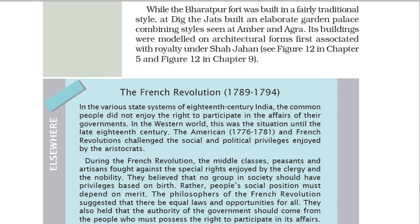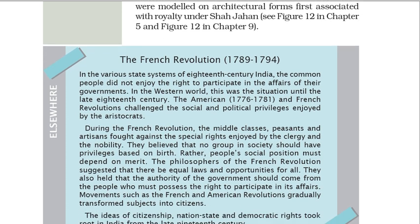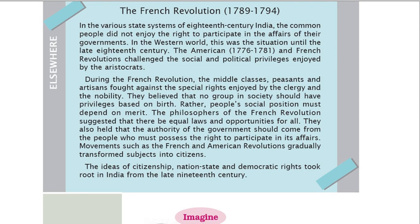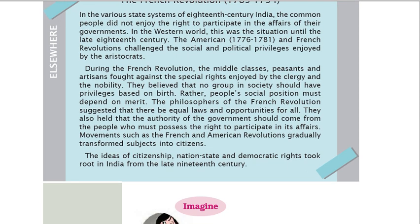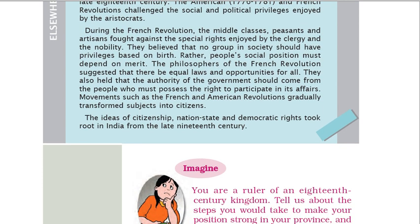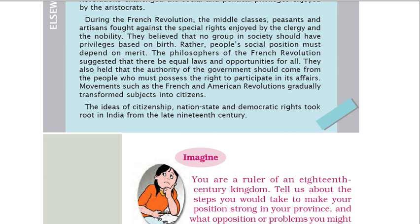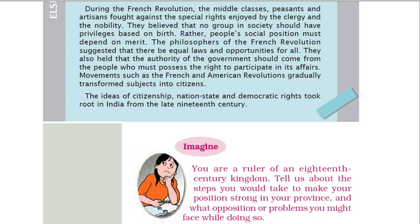Elsewhere: The French Revolution (1789–1794). In the various state systems of 18th century India, the common people did not enjoy the right to participate in the affairs of their governments. In the western world, this was the situation until the late 18th century. The American (1776–1781) and French Revolutions challenged the social and political privileges enjoyed by the aristocrats. During the French Revolution, the middle classes, peasants and artisans fought against the special rights enjoyed by the clergy and the nobility. They believed that no group in society should have privileges based on birth — rather, people's social position must depend on merit. The philosophers of the French Revolution suggested that there be equal laws and opportunities for all. They also held that the authority of the government should come from the people, who must possess the right to participate in its affairs. Movements such as the French and American Revolutions gradually transformed subjects into citizens.